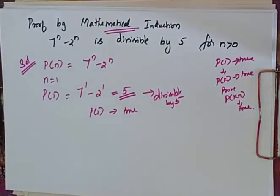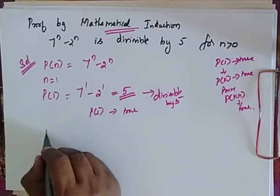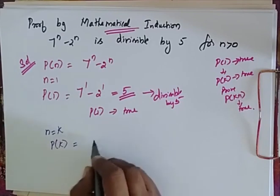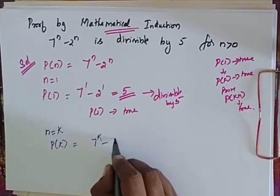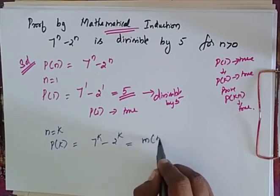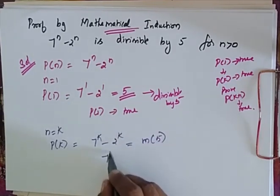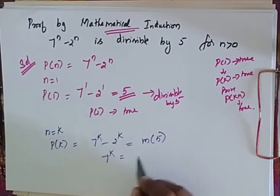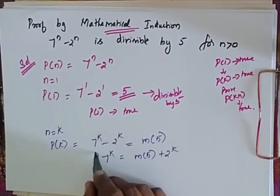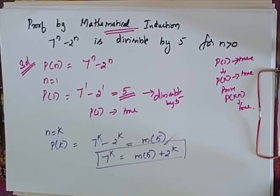Since P(1) is true, we say that it is true for k. So when n is equal to k, my P(k) is equal to 7^k minus 2^k. This is equal to some multiple of 5. So now I am going to write 7^k equal to m·5 plus 2^k. This we are going to use in further proof.